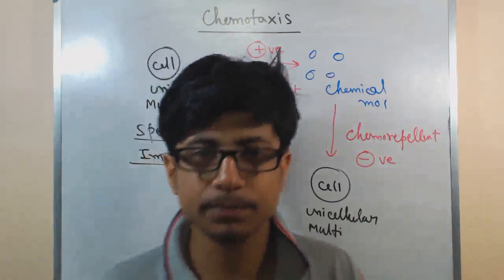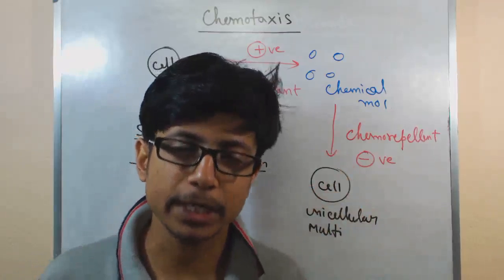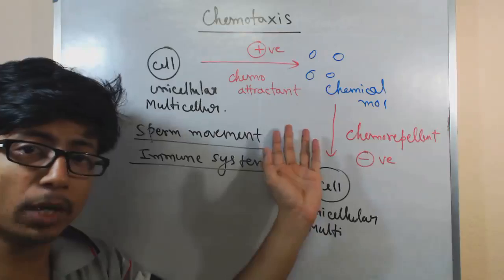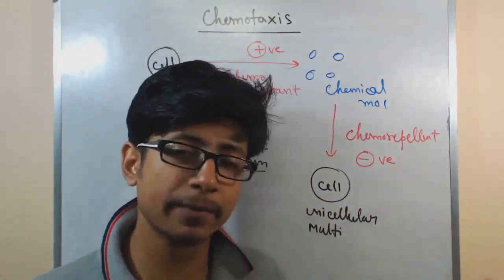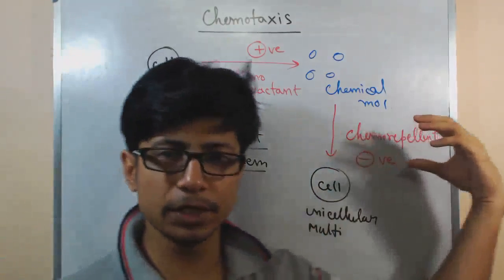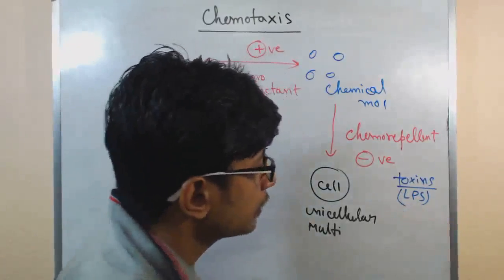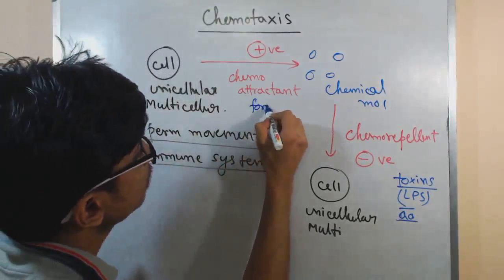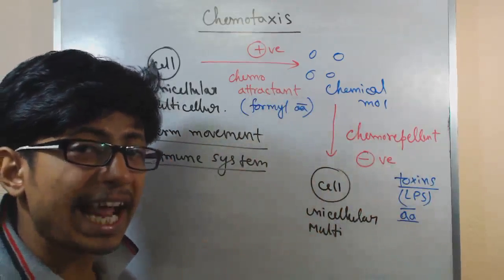Now if we talk about why they are called chemokines — 'kine' is related to kinetics, meaning movement — and these are chemical molecules that help in movement, that's why we call them chemokines. There are two types of molecules: chemokinetic molecules and chemorepellent molecules. Chemokinetic molecules in unicellular organisms act as food particles, such as concentration of particular sugars like glucose, or some amino acid sequences. For chemorepellent molecules, examples include certain toxins like LPS, and also some amino acid sequences. Generally, attractant molecules are played by formyl amino acids.